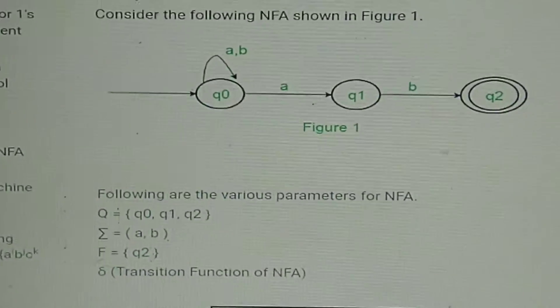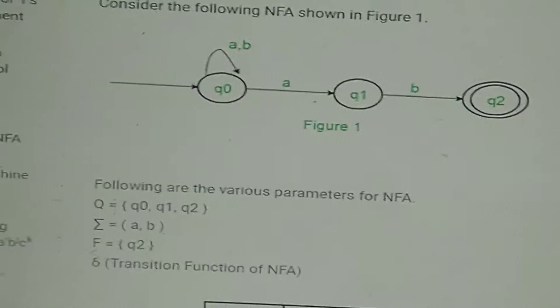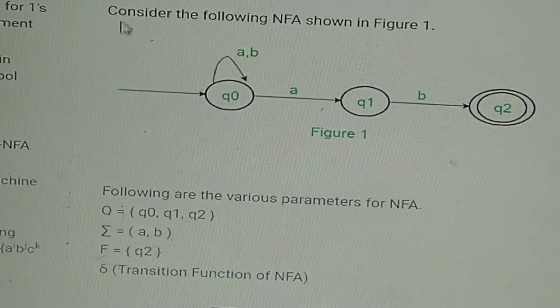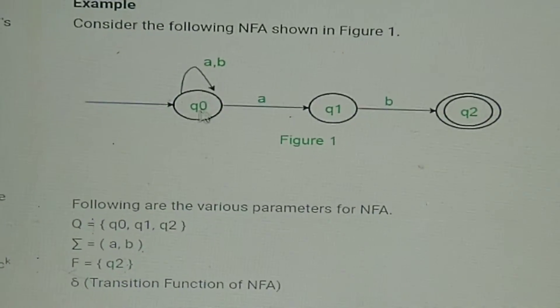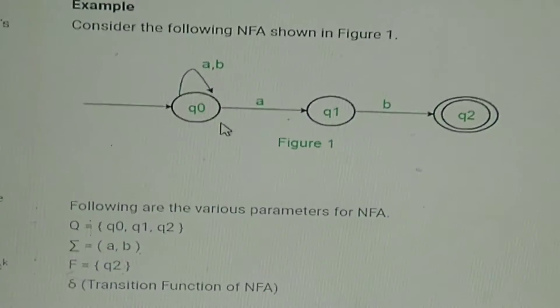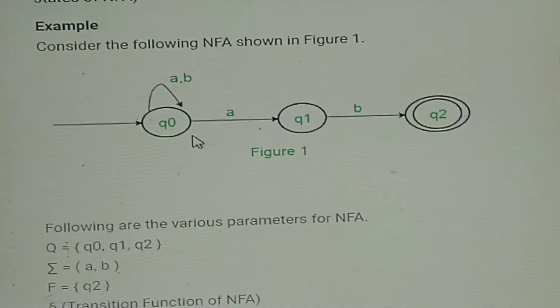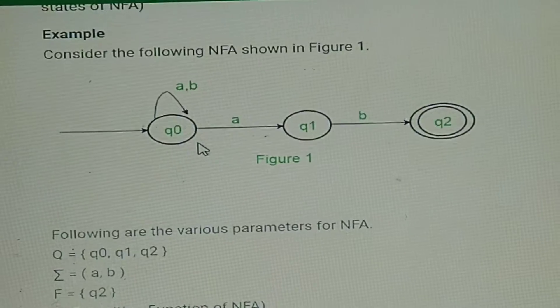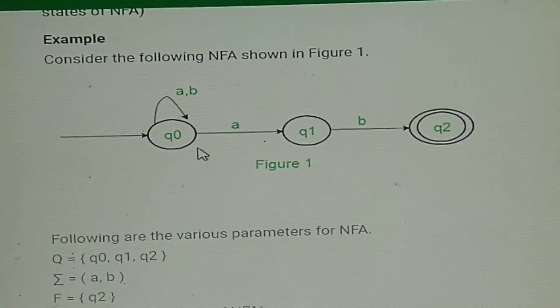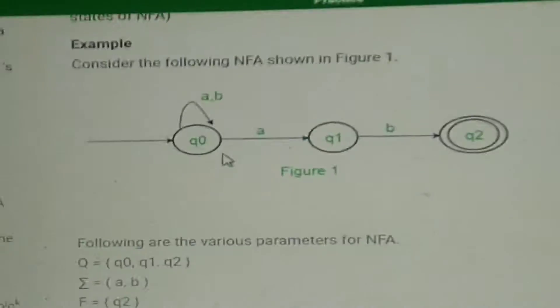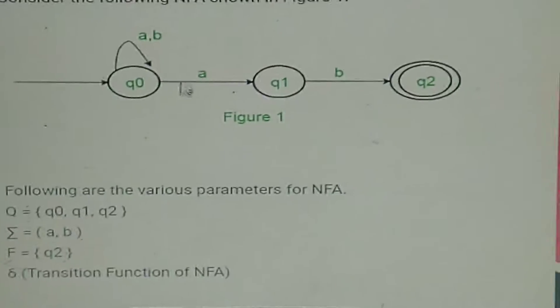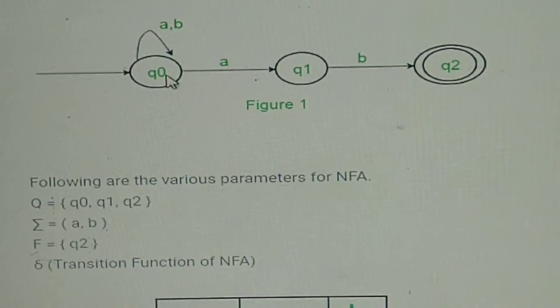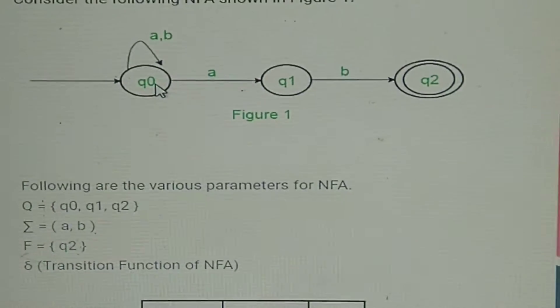You might be aware that the very basic difference is that in NDFA, on giving a certain input to a state, it might translate to multiple states. Like here, on giving 'a' to q0, it is transiting to q0 as well as q1. Whereas in DFA, it doesn't happen. In DFA, whenever you give 'a' to a certain state, it will only transit to one state rather than multiple states.